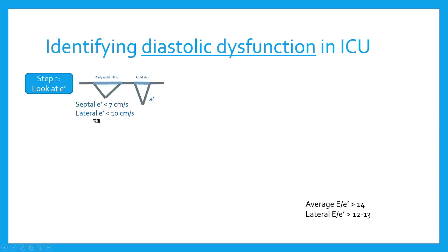I'm almost always starting with my lateral E-prime because the number 10 is a lot easier to remember than 7, and because a lot of patients in the ICU have some degree of right ventricular dysfunction as well. They're on a ventilator, they're hypoxemic, they have underlying pulmonary hypertension. So their septum sometimes can behave funny, especially if they're volume overloaded. So my septal E-prime velocity is a little bit less reliable when my RV is really under stress. I will use my lateral E-prime velocity a lot more than my septal, but you can measure both, and you probably should.